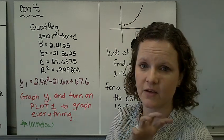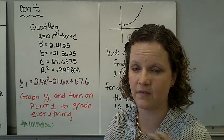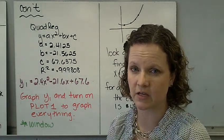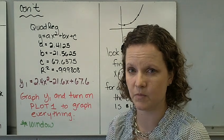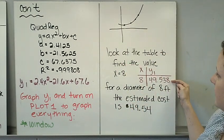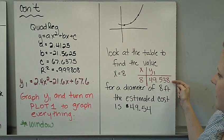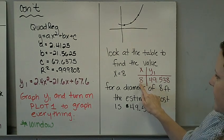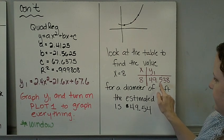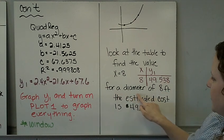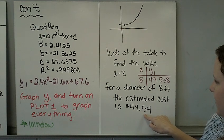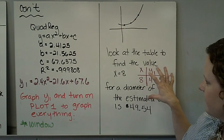If you remember, the question asked for the quadratic function, and it also asked you to make a prediction for a diameter of 8, for a pool with a diameter of 8. If you go to your list, or your table, in your calculator, you look where X equals 8, Y1 is 49.538. So for a diameter of 8 feet, the estimated cost is $49.54. So everything's right there.